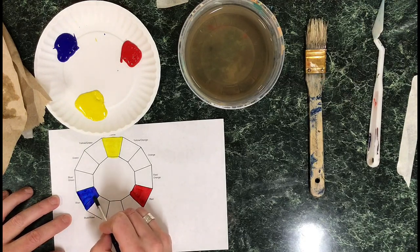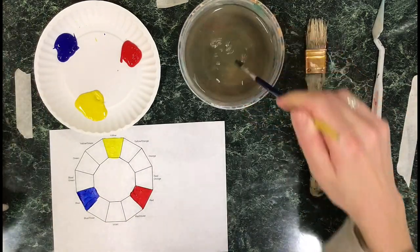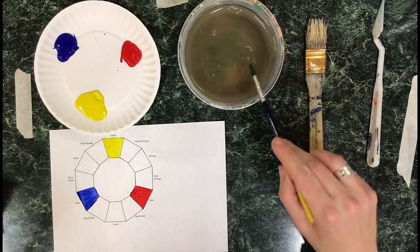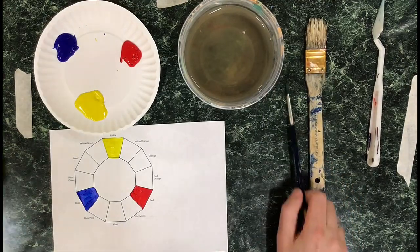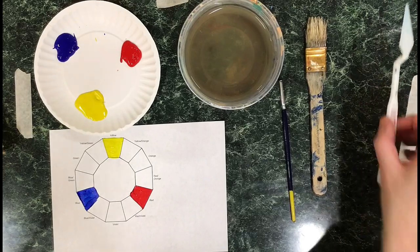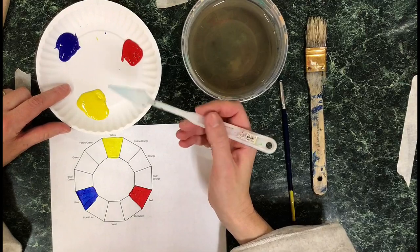We started with our primary colors. I dry my brush in between each one. I start with yellow because yellow is our lightest color and it's really easy to get it dirty and get other colors in there, so I always start with my lightest colors.